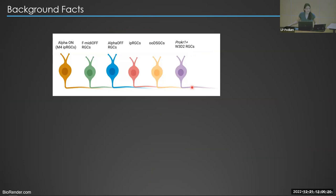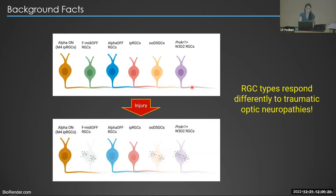An interesting observation of these different retinal ganglion cell types is that they differ strongly in their ability to survive insults. As we can see in the schematic, some retinal ganglion cell types are more resistant while some are more susceptible to insults. This tells us that retinal ganglion cells have a selective resilience to injury.